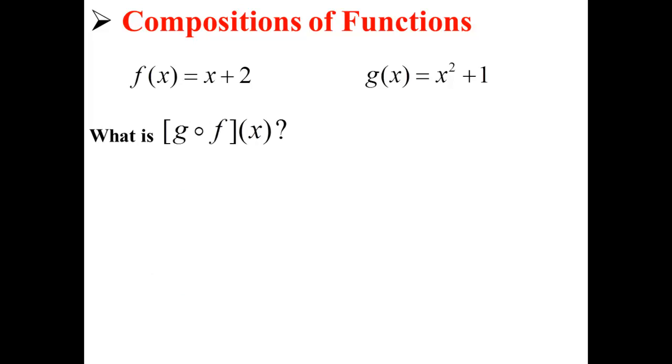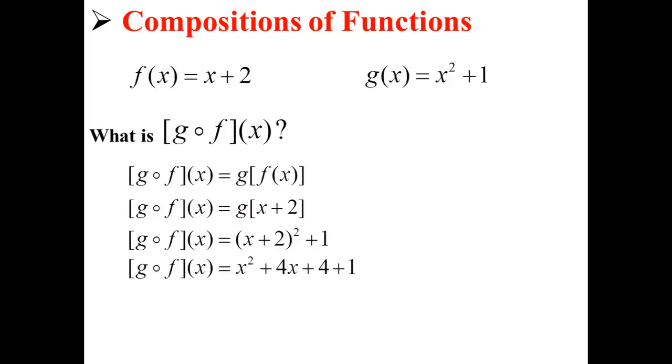How about the opposite? What is g of f of x? So we need to find the g of f of x. That's equal to the g of x plus 2, which is equal to x plus 2 squared plus 1, which simplifies further to x squared plus 4x plus 4 plus 1, which simplifies even further to x squared plus 4x plus 5.